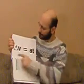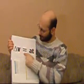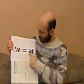I'd studied hard, so I knew V could vary, and delta V was always A times T.